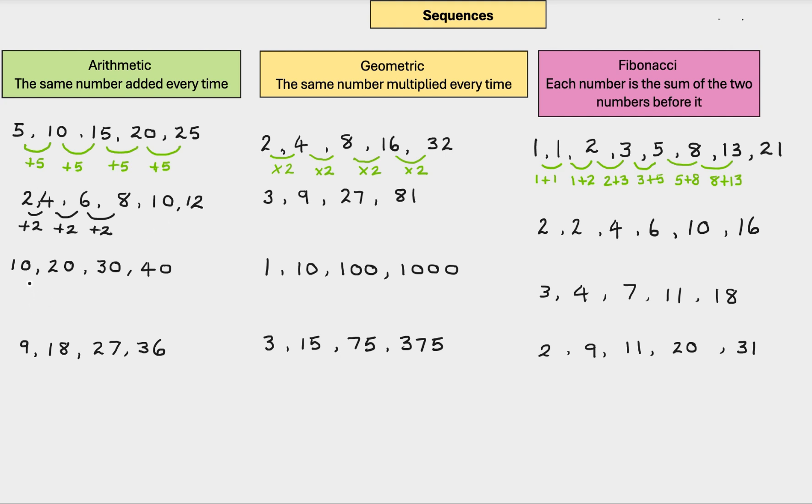The next one we have 10, 20, 30, 40. So we have gone up in 10 every time. So the next one would be 50.